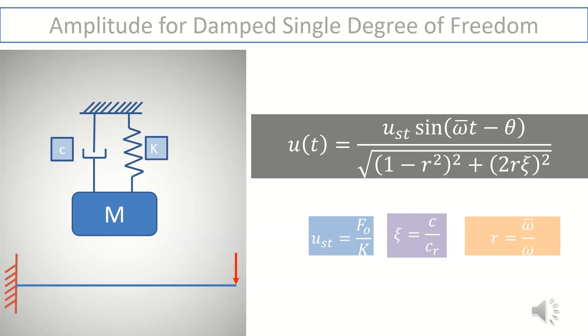Critical damping is the value of damping when the structure will not oscillate at all under the effect of dynamic load. R is equal to frequency ratio, that is the ratio of the forcing frequency to the natural frequency.